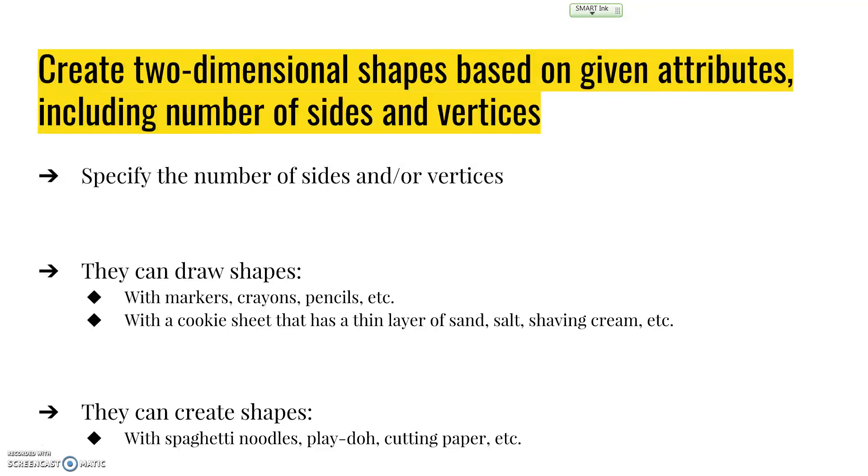They can draw shapes with markers, crayons, or pencils. You could also take a cookie sheet with a thin layer of sand, salt, or shaving cream, and they could practice drawing shapes with given attributes. They could create shapes with spaghetti noodles by breaking them into segments. They could use Play-Doh, or cut or tear shapes from paper. The more experiences they have with different ways of making these shapes and talking about attributes, the more they remember and understand.